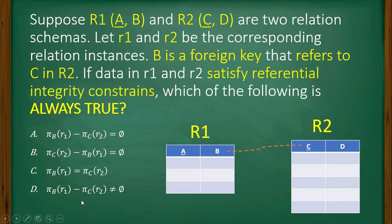Next is select B from r1 minus select C from r2 not equal to empty set. This is also not going to be true because C is always going to have more values or equal values as compared to B. It can never have less values than B. So these three are the misconceptions. This is the true answer.